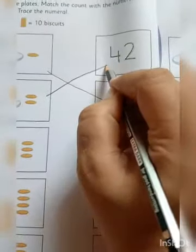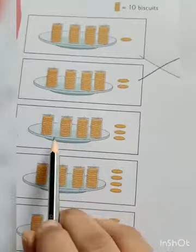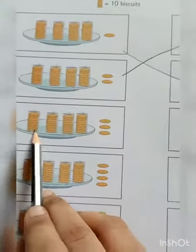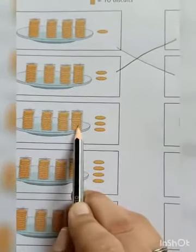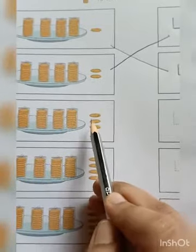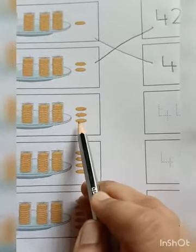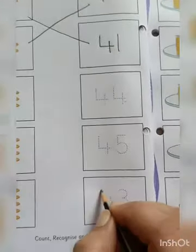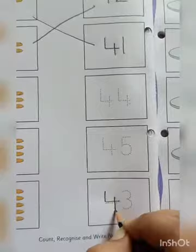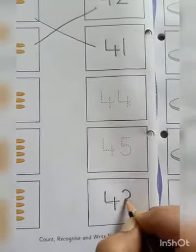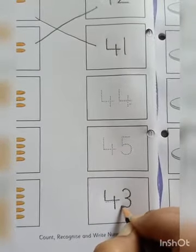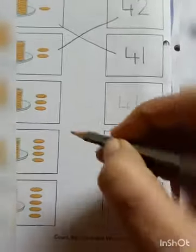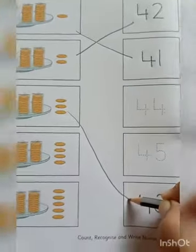What you will do first? You are going to trace the number and match it with the correct box. Now can you see here? Again, let's count fast. 10, 20, 30, 40, 41, 42, and 43. So where is number 43? Yes. You are going to trace the number nicely. You will say and trace: 4, 3, 43, and then match it with the correct box.